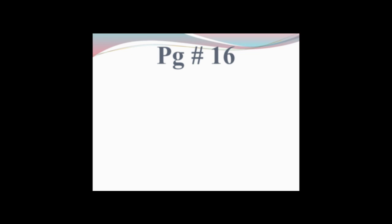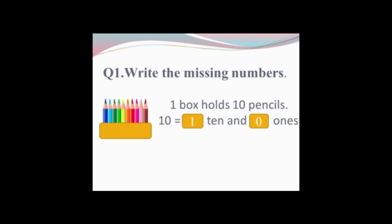Page number 16, read question 1. Question 1 is: write the missing numbers. Here is a pencil box and this box holds 10 pencils: 1, 2, 3, 4, 5, 6, 7, 8, 9, 10. How many pencils are in this box? 10 pencils. 1 box holds 10 pencils. You can see there is a 0 under ones and a 1 under tens. So we are writing 1 ten and 0 ones.